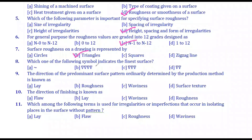Which one of the following symbols indicates the finest surface? The symbol indicates the direction. The direction of the predominant surface pattern is determined by the production method, which is known as the direction of finishing, also called lay direction.